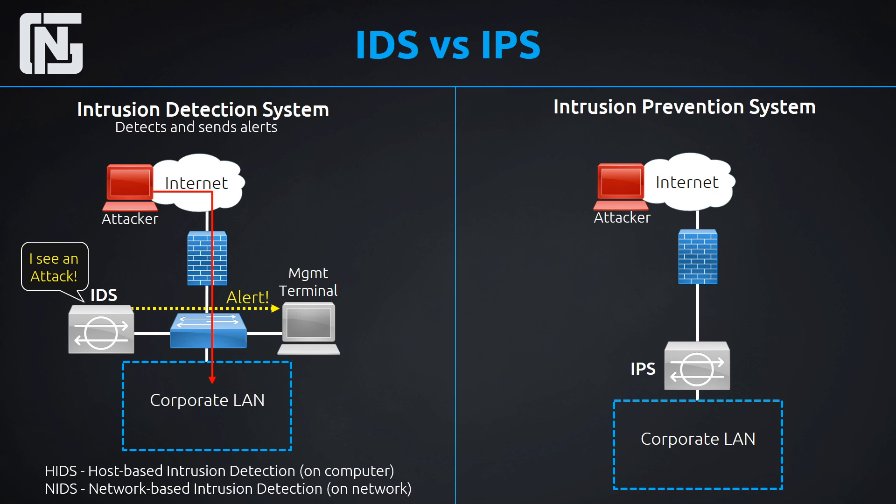There are two types of IDS: a host-based intrusion detection system, called HIDS, which runs on just a single computer and performs intrusion detection for that specific computer. In networking, we don't really see HIDS too often anymore. We're really focused on the network-based intrusion detection systems — the IDS device that actively watches the network and detects and sends alerts.